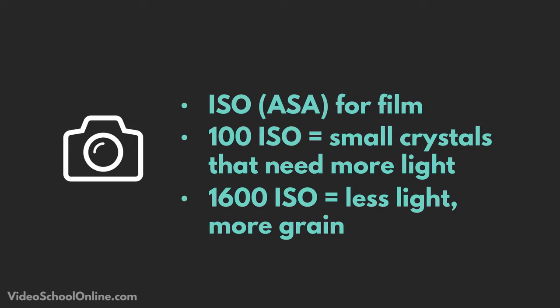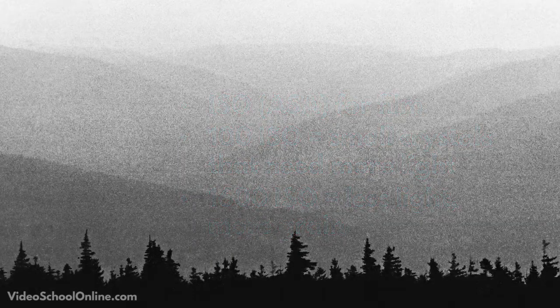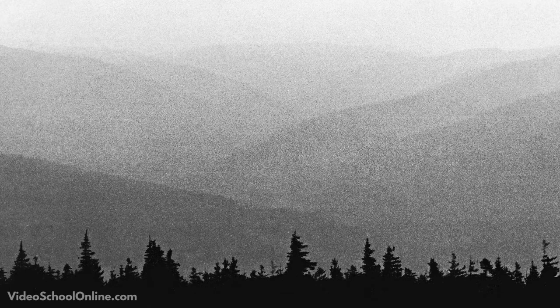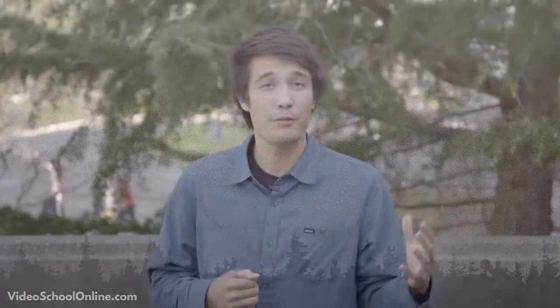On the other side, a 1600-speed ISO meant you had much larger crystals, so you could take photos in much darker situations, but you'd have a much grainier image — you could actually see the crystals in the film. Many people love film for that texture, because those random crystals created a distinctive look.